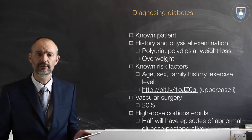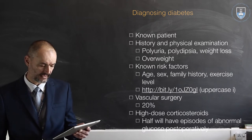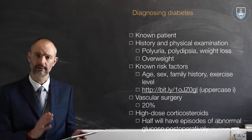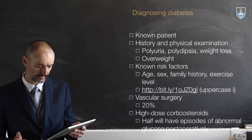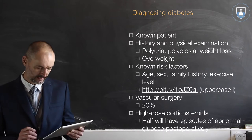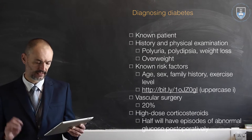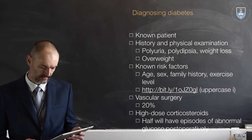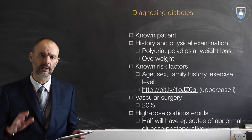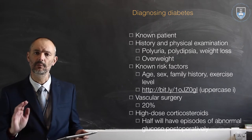There are general known risk factors such as age, sex, family history, and problems with exercise levels. These have even been built into an online calculator, similar to the cardiac situation, available at bit.ly/1-zero-JZ-zero-g-I. Watch out for the patient who comes for vascular surgery — up to 20% of them will be diabetics.